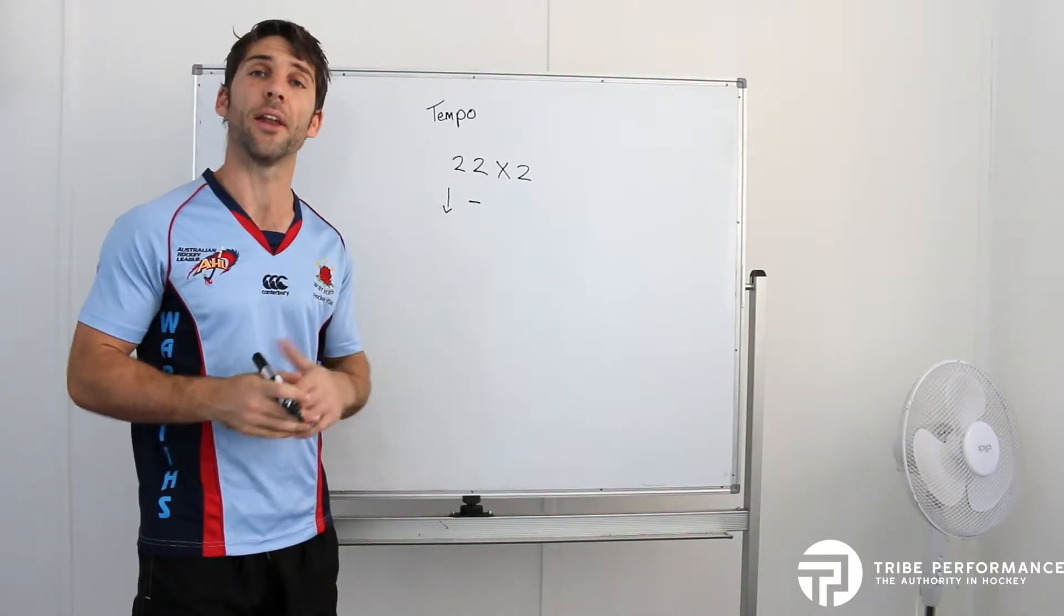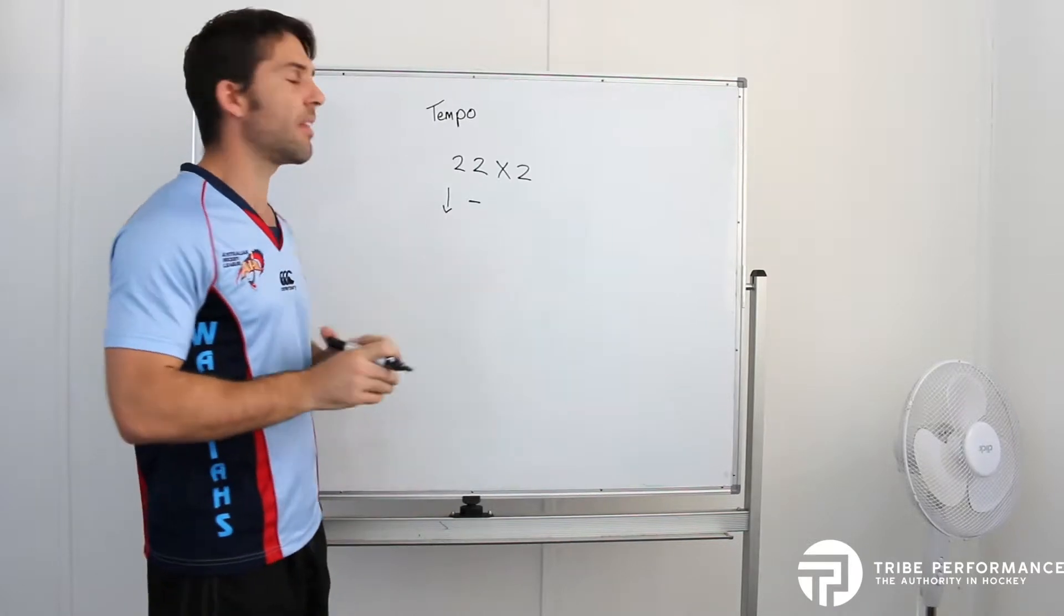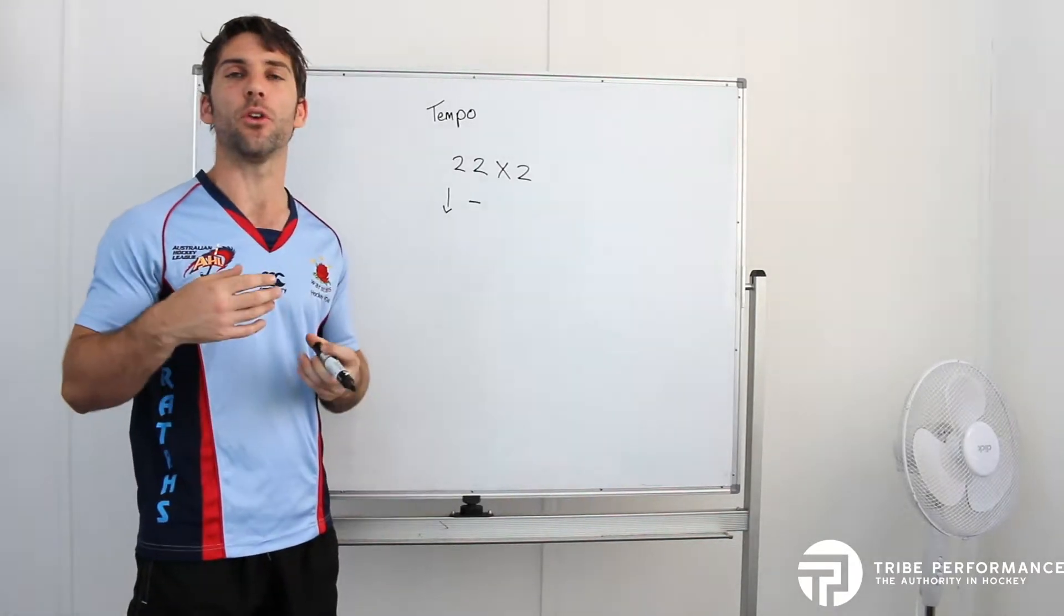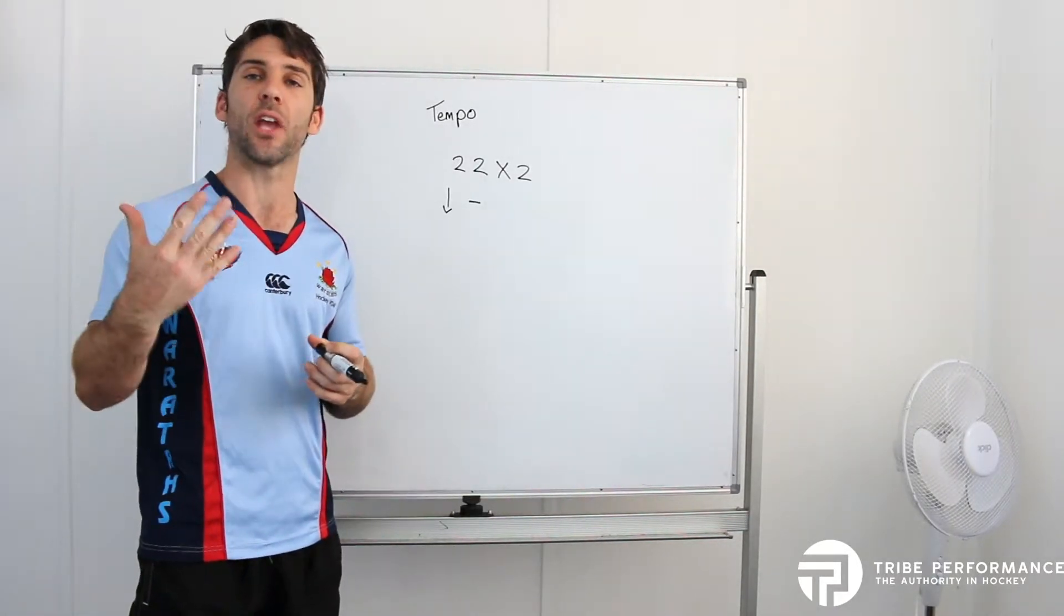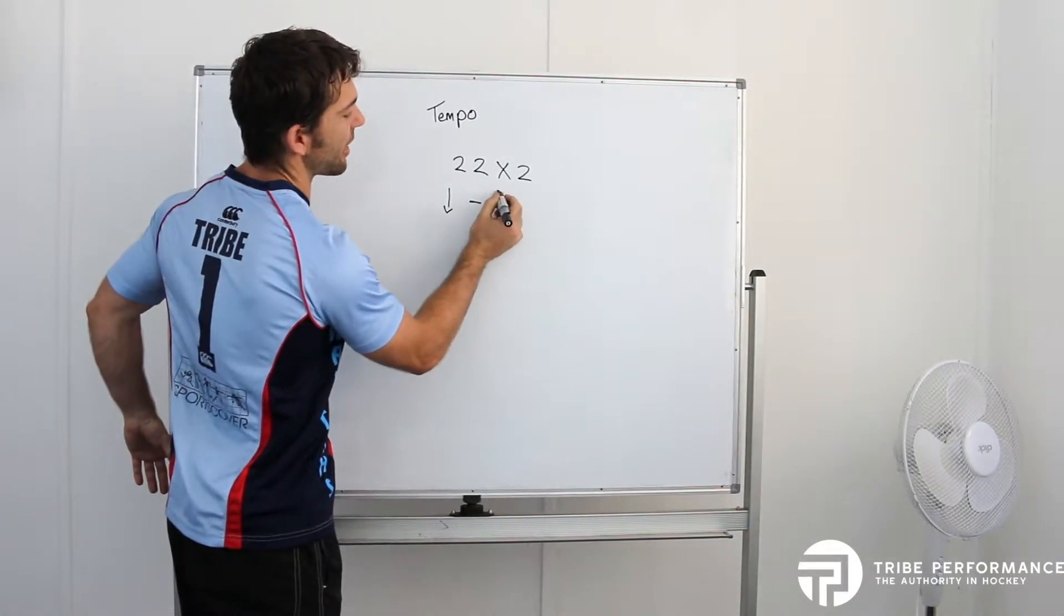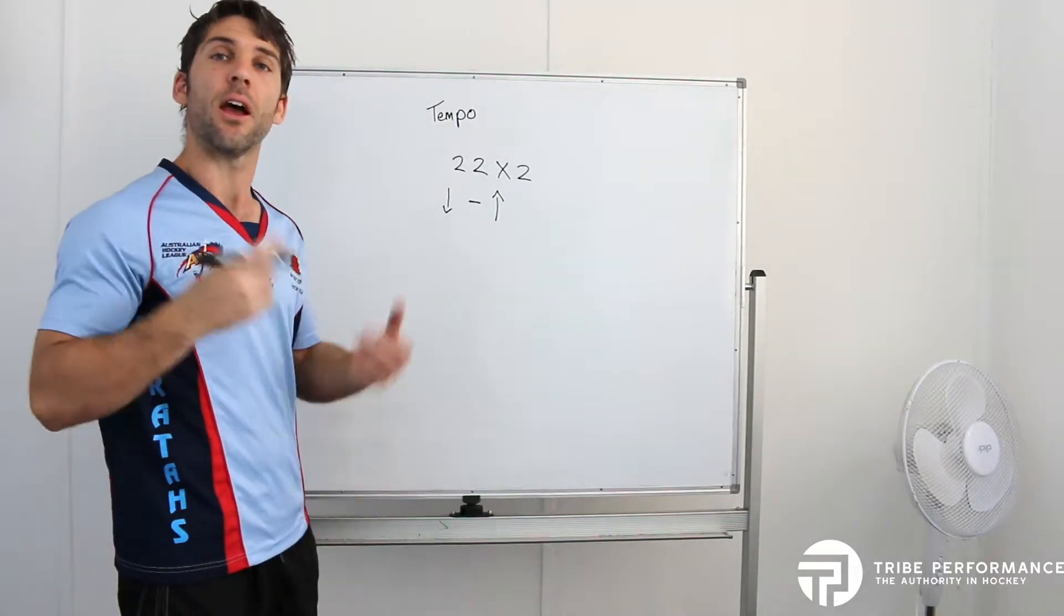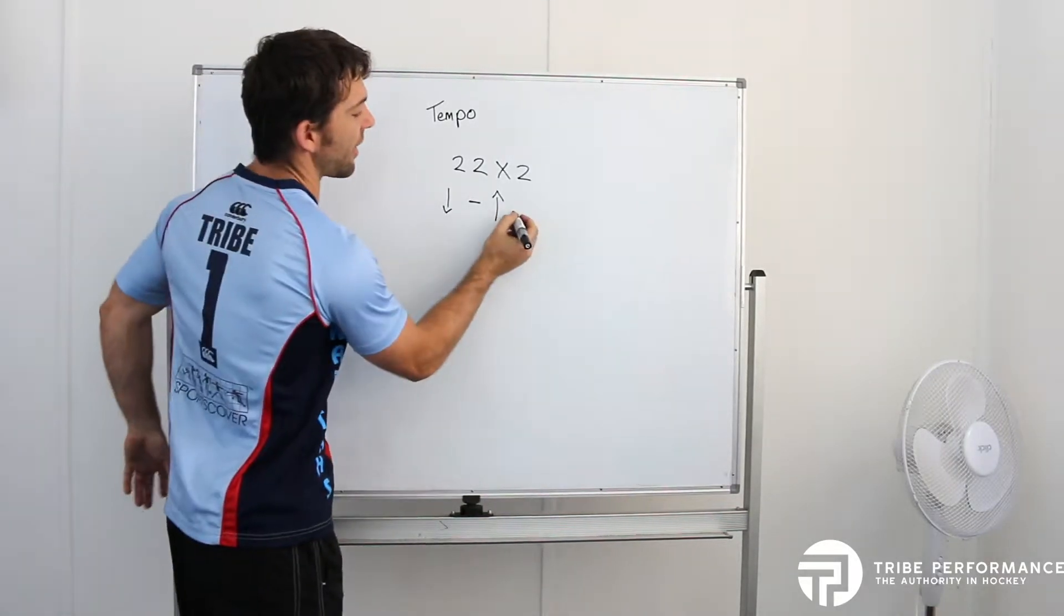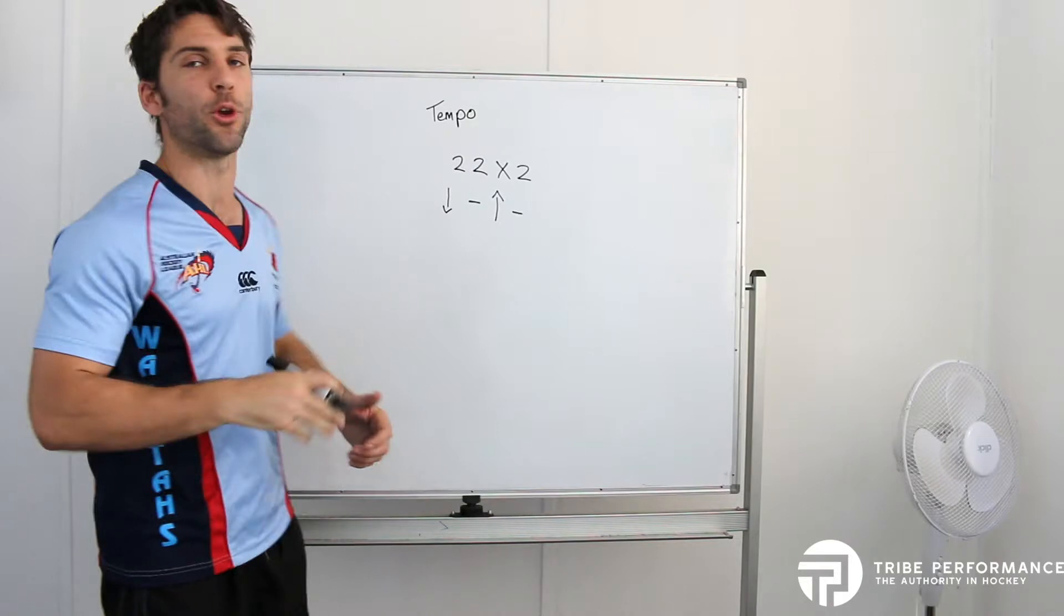I would pause in the bottom of the squat for a count of two, one two. When you see the number X, that is when you go as fast as you can. So that would be the upward movement of the squat, up as fast as you can.